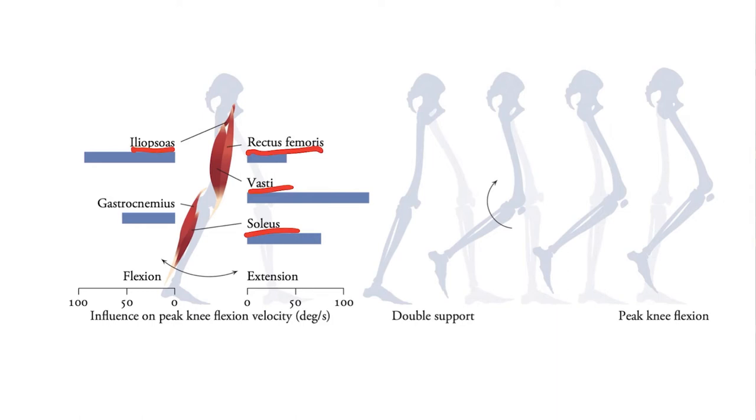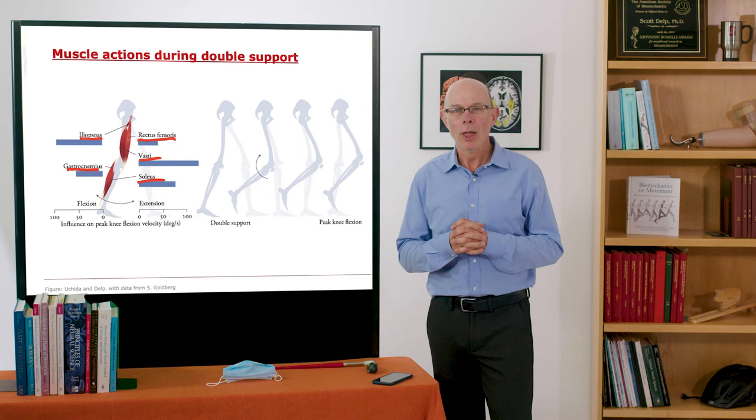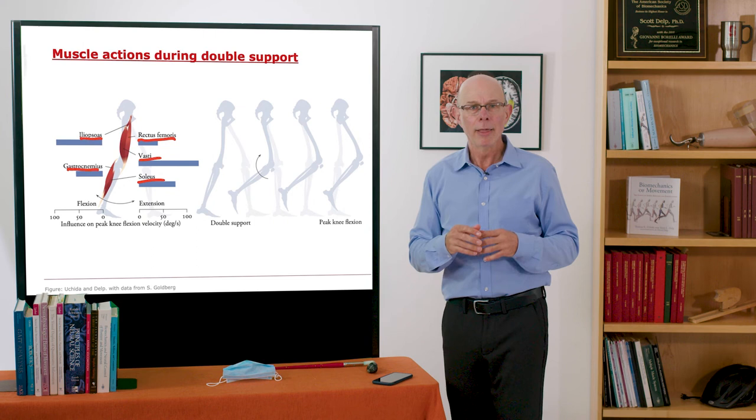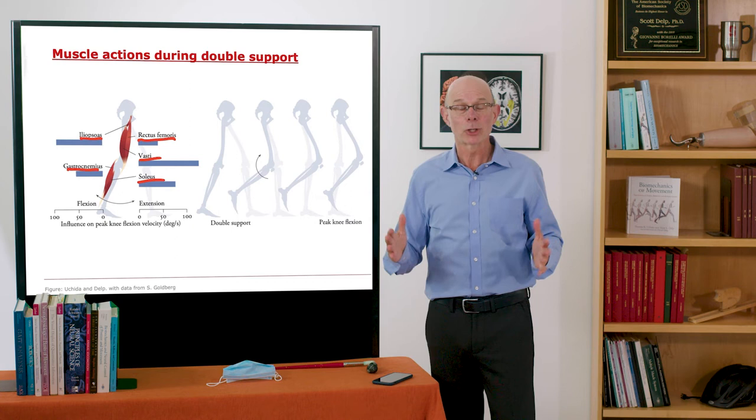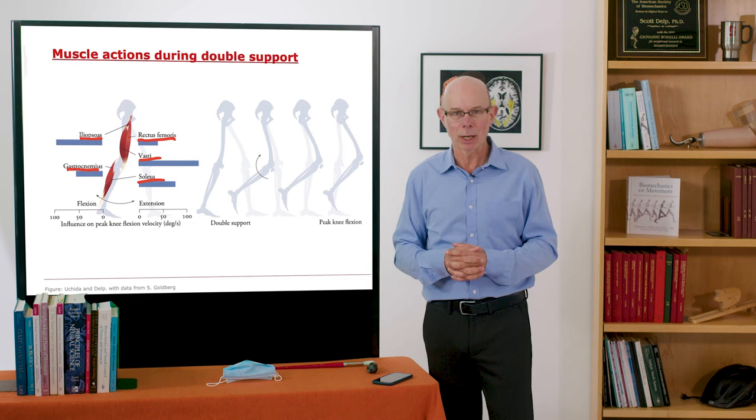Now there's a couple things to note here. One is that, you expect rectus femoris and vastae. They cross in front of the knee. They're going to decelerate knee flexion. They produce a knee extension moment. But what you also see is there's a muscle soleus that doesn't even cross the knee that produces a large knee extension acceleration. It does that through that concept of dynamic coupling we covered in chapter 10.